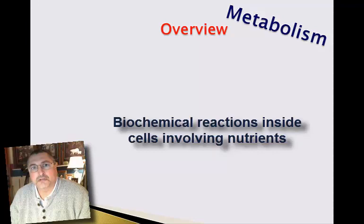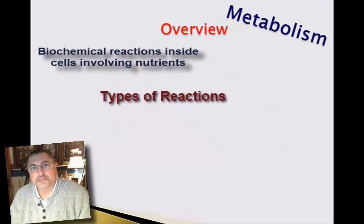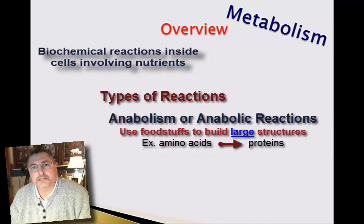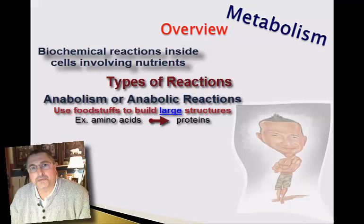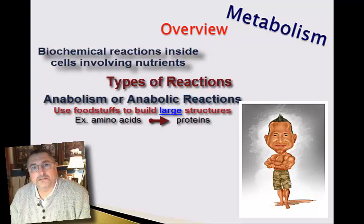There are actually two sets of reactions in metabolism. Those sets of reactions in which we use the foodstuffs to generate larger structures by chemically linking them together — that set of reactions is known as anabolism, or the anabolic reactions. These are the easy ones to remember because we frequently hear of athletes misusing hormones called anabolic steroids, typically to build muscle mass.